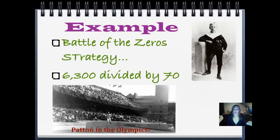Here is our first example. We're going to use the Battle of the Zeros strategy to divide 6,300 by 70. You see that picture of General Patton when he was about your age, and that's General Patton in the Olympics when he was younger. He competed in like five different events, swimming and archery and cross country. He's a pretty well-rounded guy. Let's go ahead and see how we did this.